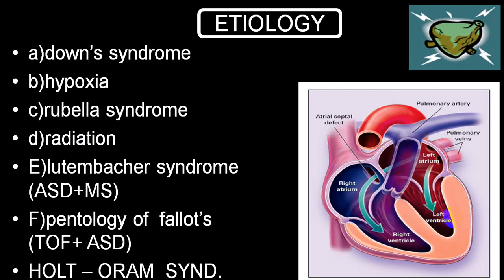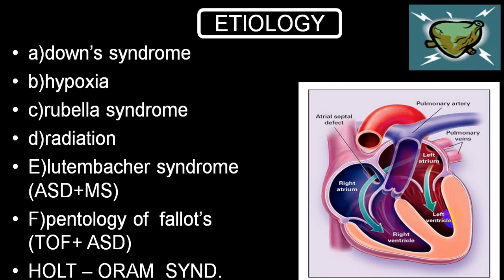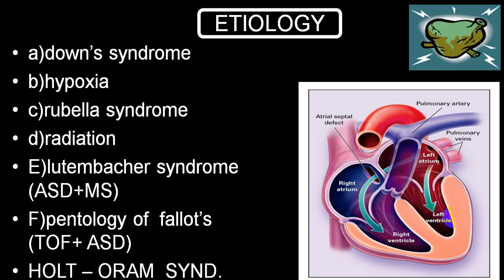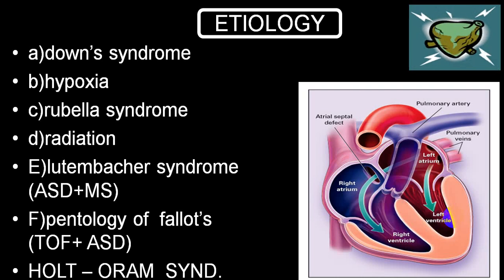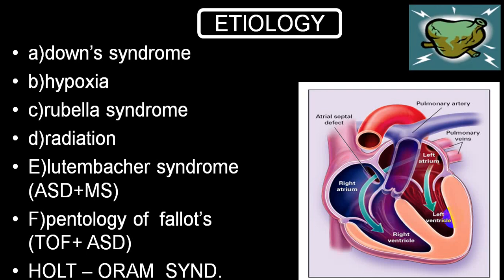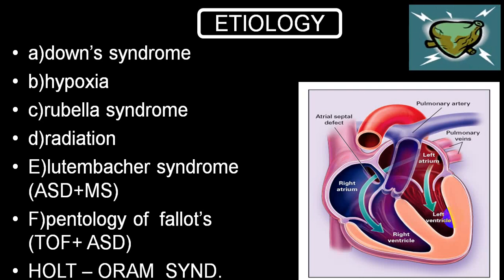The commonest cause of ASD is Down syndrome — trisomy 21. Other causes include hypoxia, rubella syndrome, and radiation exposure during pregnancy from X-rays or radiotherapy. If ASD is associated with mitral stenosis it is called Lutembacher syndrome. If ASD is associated with tetralogy of Fallot it is called pentalogy. There is also Holt-Oram syndrome, a congenital defect involving abnormalities of the radius bone along with other defects.